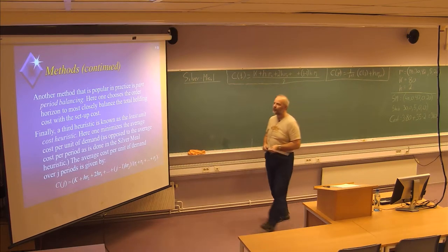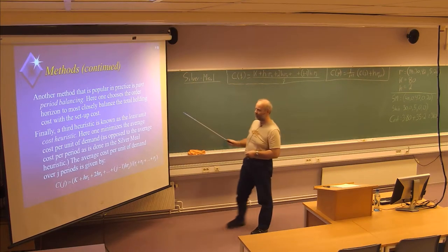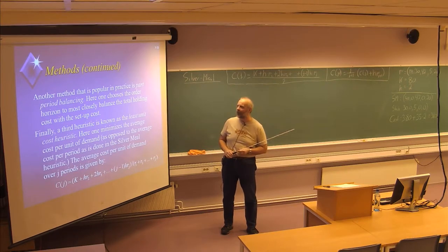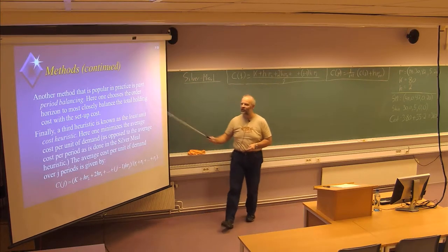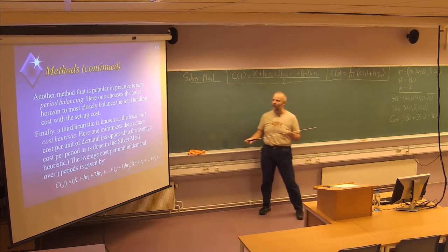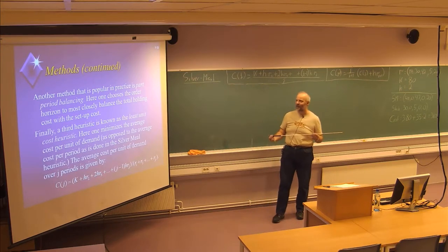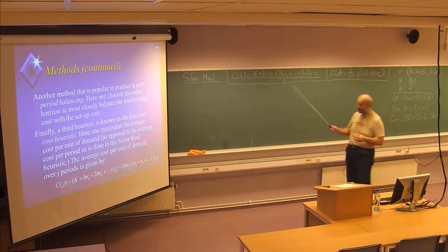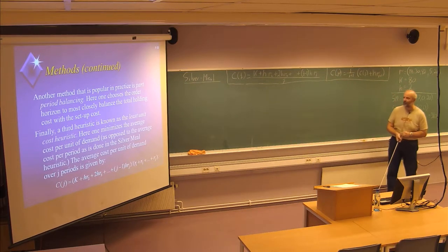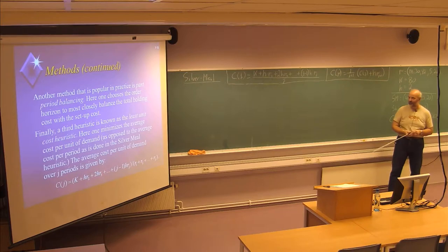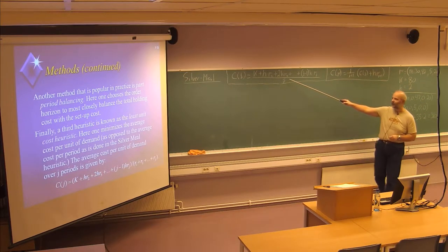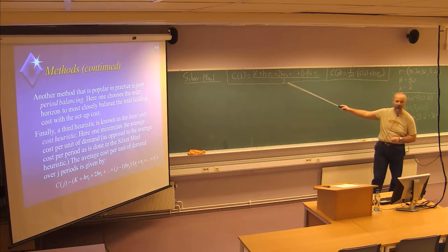Now we should try another one which is called the part period balancing, and the idea here is to choose the order horizon that most closely balances total holding cost with the setup cost. This is very similar to the silver meal heuristic, but you are not dividing by J, the number of periods.